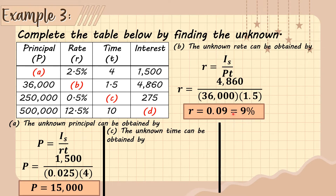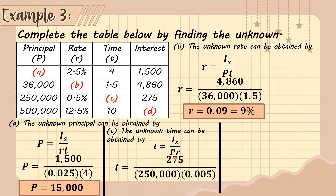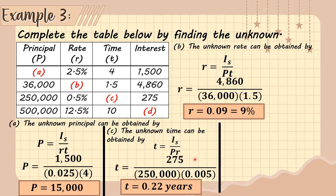For letter C, the unknown is time. The given are the principal, rate, and interest. The formula is t = I_s ÷ (P × r). Substituting: the interest is 275, the principal is 250,000, and the rate is 0.005. Dividing, we get approximately 0.22 years.